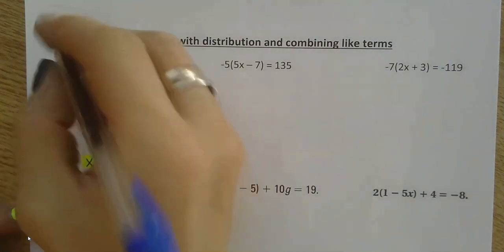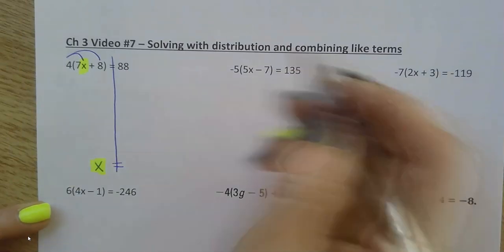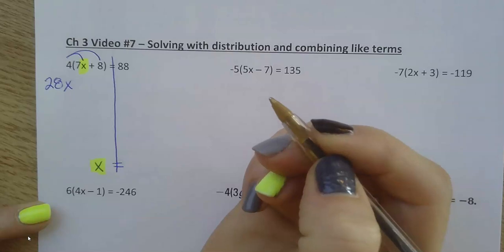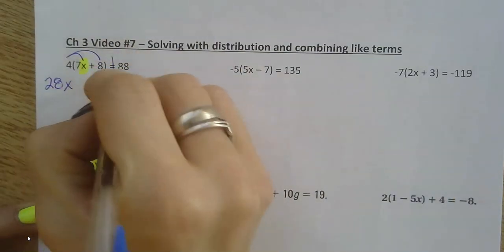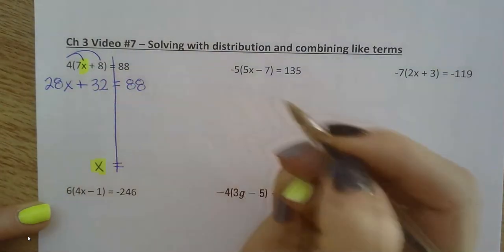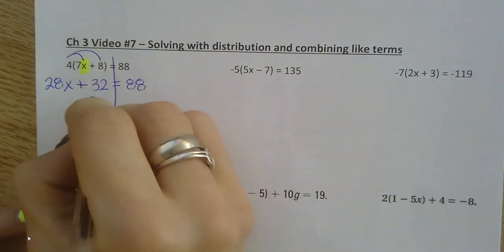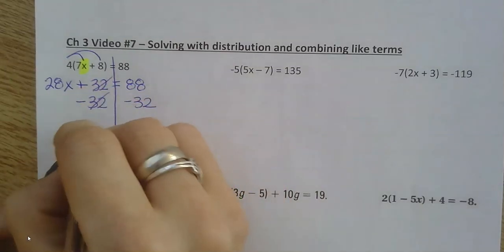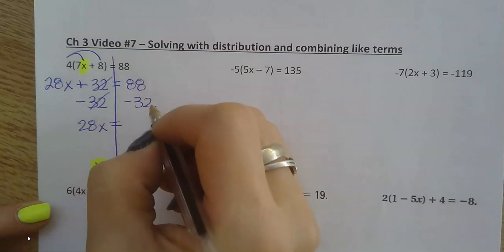So I do see a number outside of my parentheses. I'm going to draw those arrows and distribute first. 4 times 7x is 28x. 4 times 8 is 32. If it's positive, put a plus sign. And copy everything down. Now it's just a two-step equation. Get rid of adding and subtracting first. So minus 32 on both sides. It's 28x equals. You can go ahead and do this subtraction.